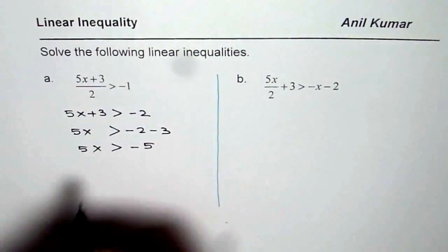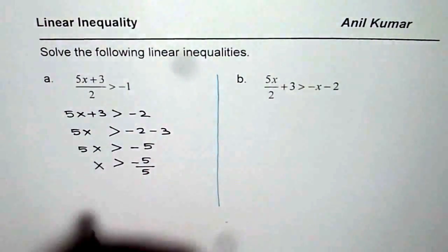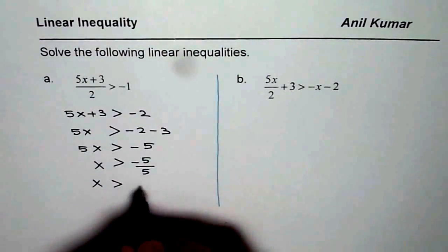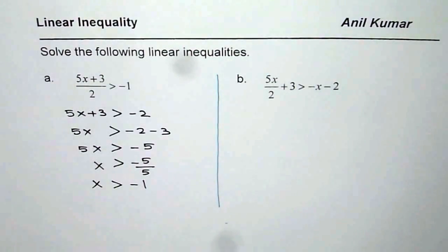So what we get here is 5x is greater than minus 5. Now you can divide by 5. Once you divide by 5, you get minus 5 divided by 5. Or you can write down x is greater than minus 1. So x greater than minus 1 is the solution for this linear inequality.